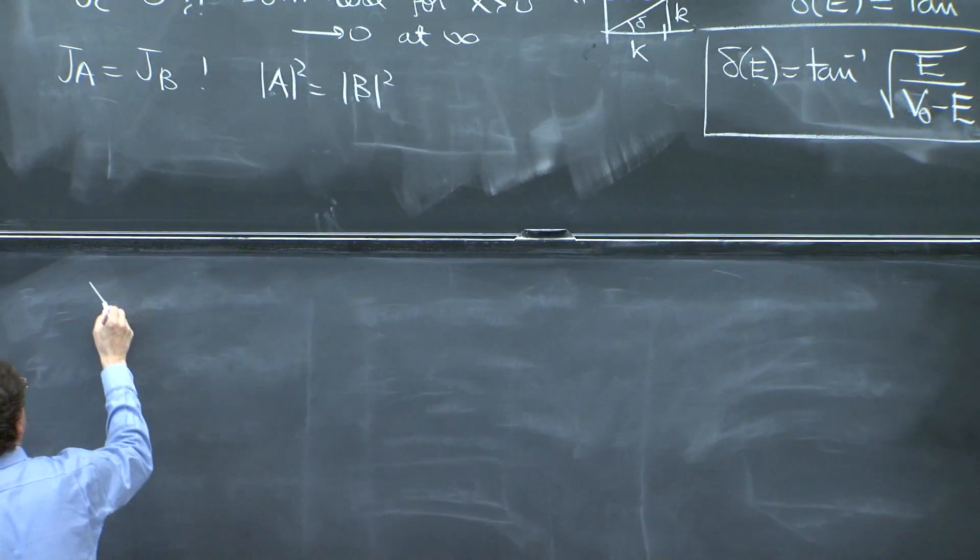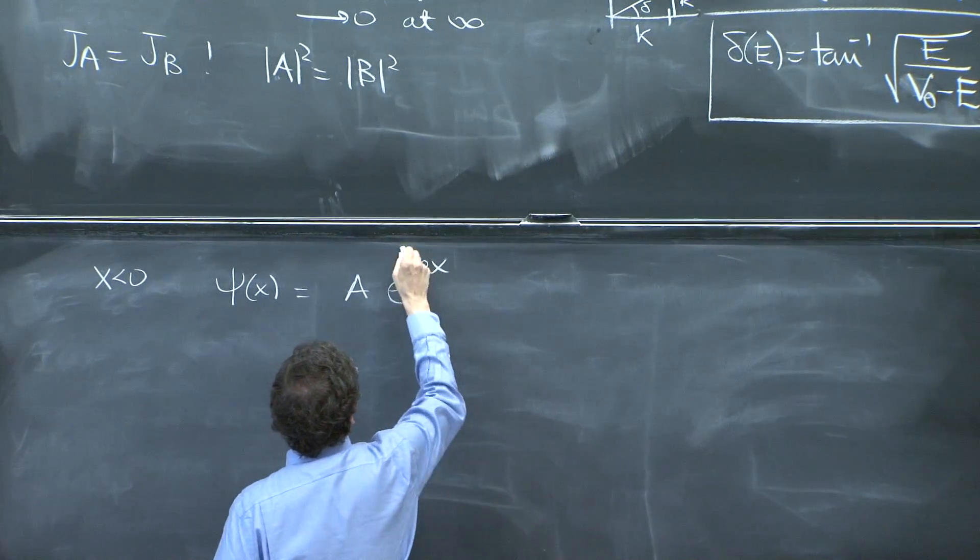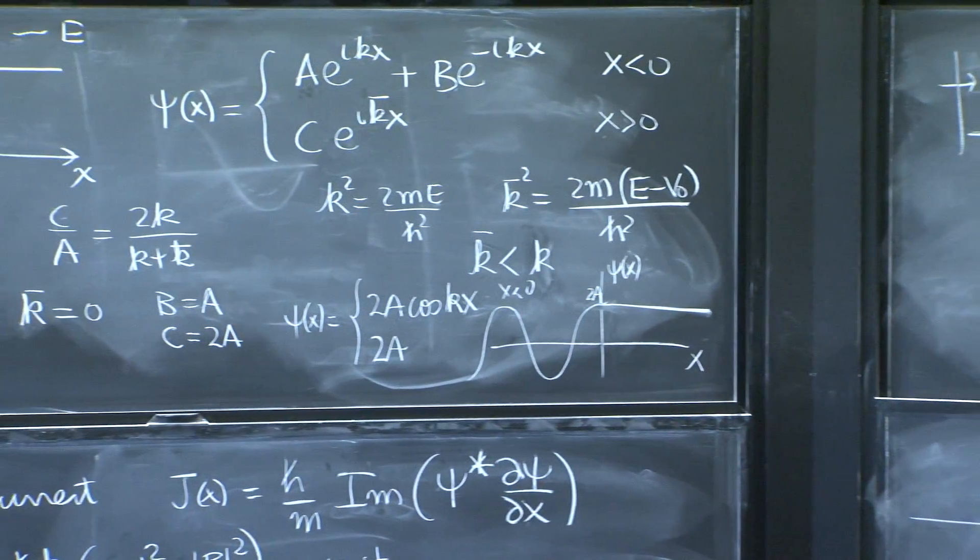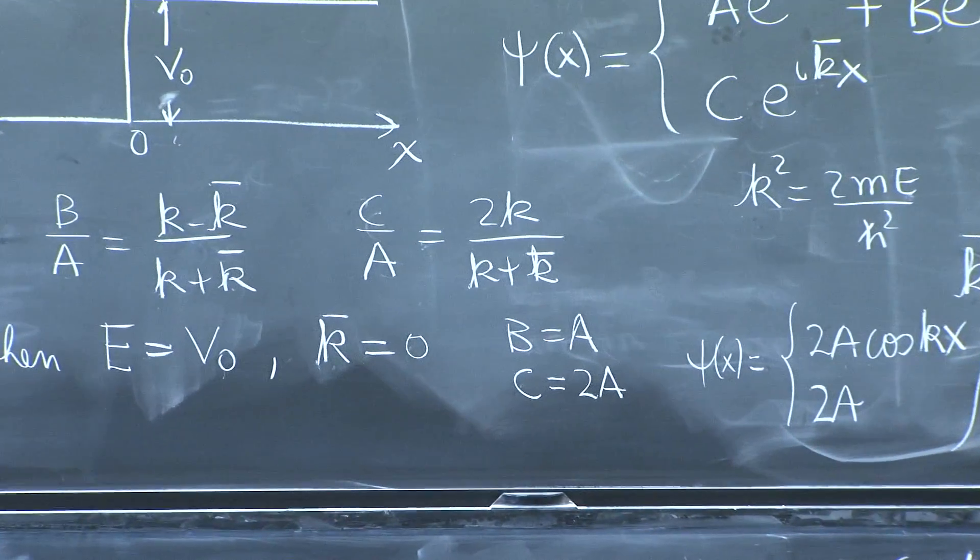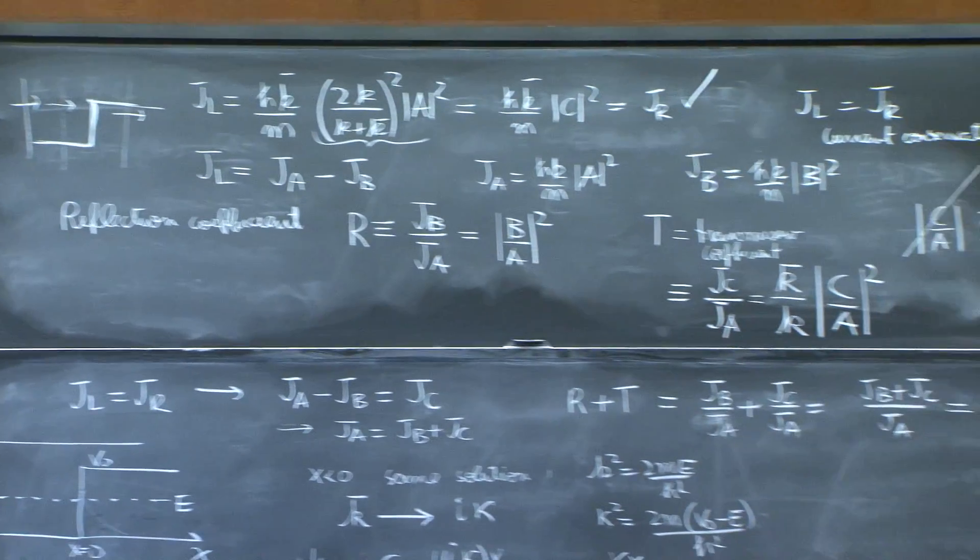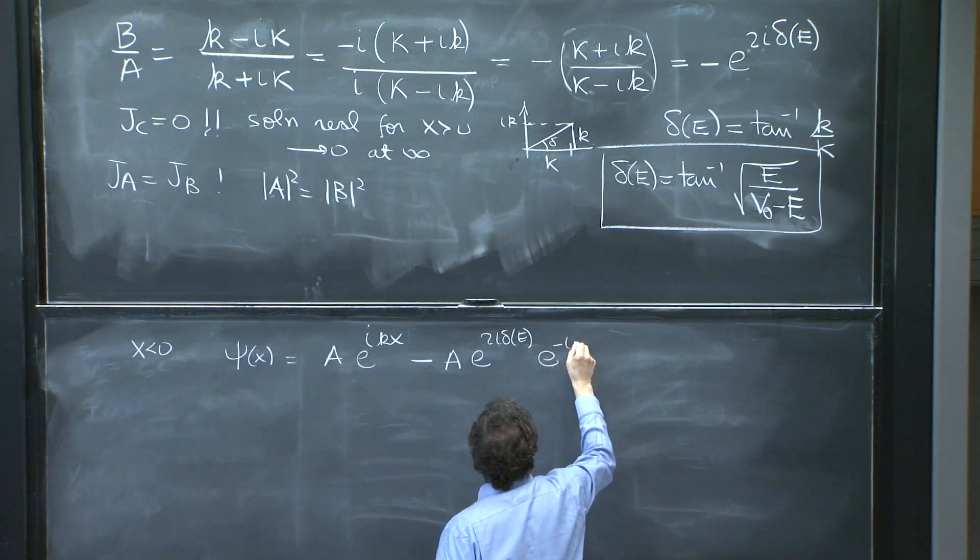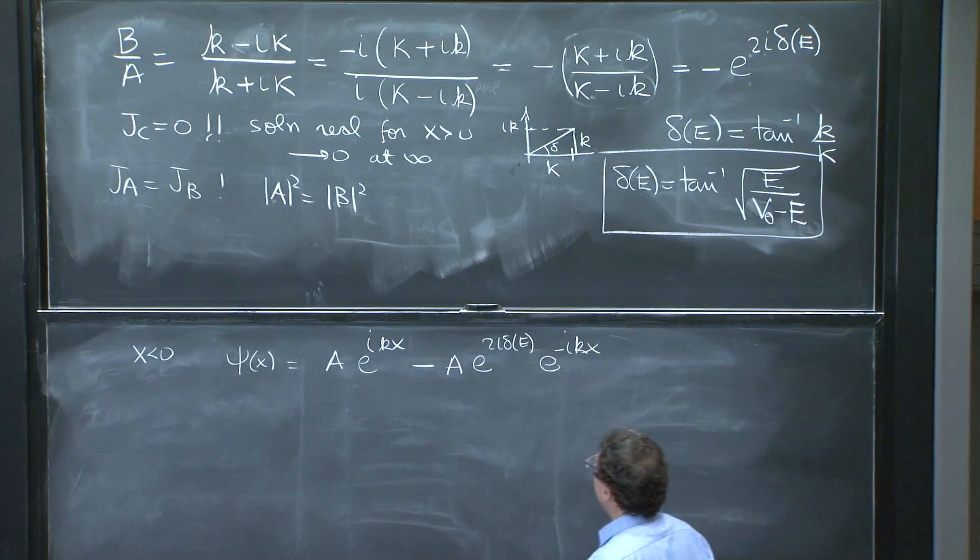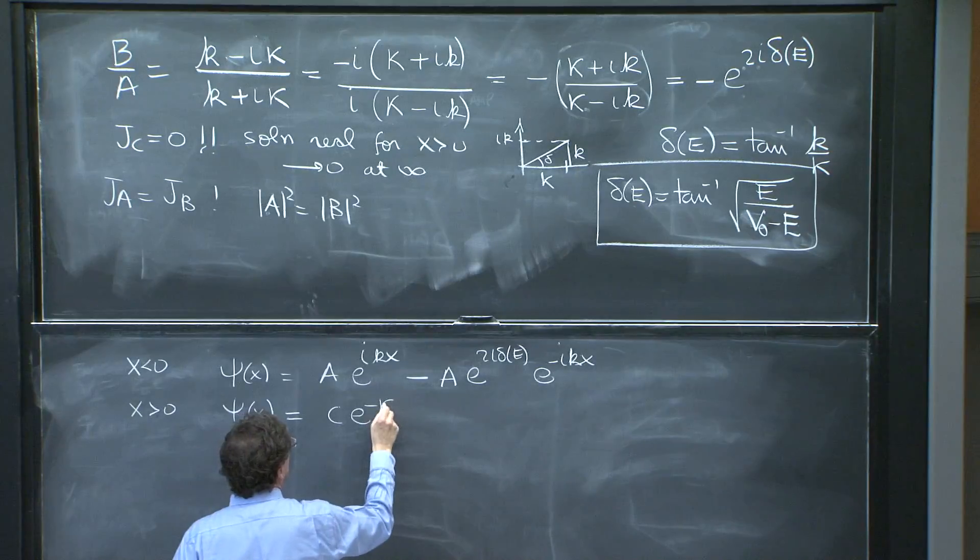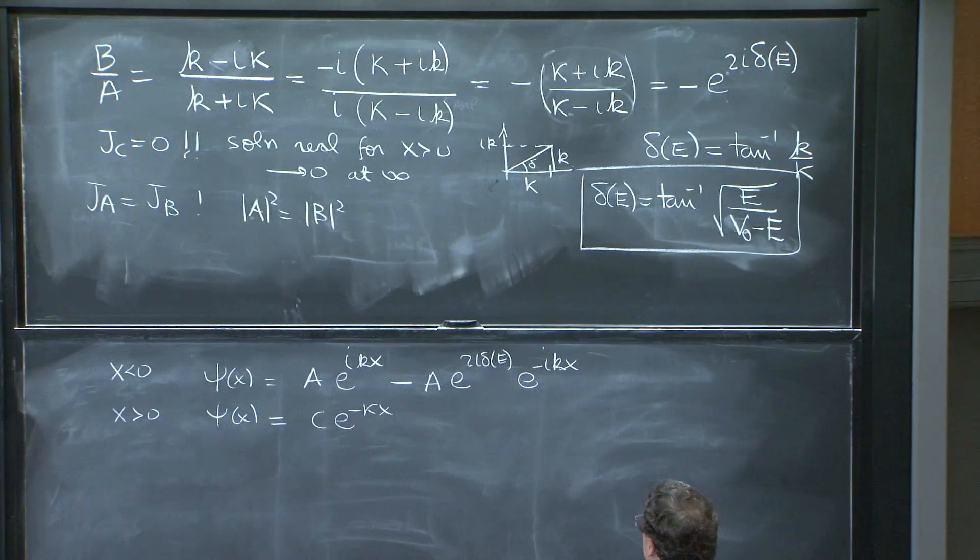So that's a consistent picture. This phase is very important. So what happens for a solution for x less than 0? Well, psi of x would be a e^(ikx) plus b. b all the way to the left there. The solution is a + b e^(-ikx). Of course, we now know what the b is. So this is -a from the ratio over there, e^(2iδ(e)) e^(-ikx) for x less than 0. And for x greater than 0, psi of x is going to be c e^(-κx). And I'm not bothering to write the coefficient c in terms of a.